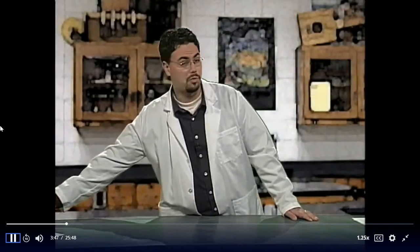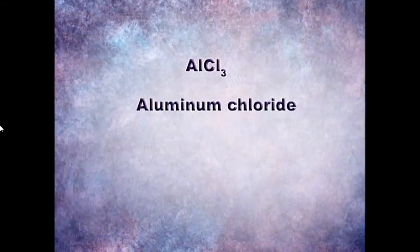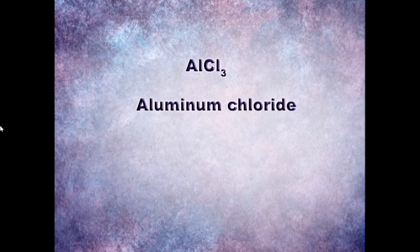Now that we've reviewed the ionic bond, let's take a closer look at an ionic formula. This particular ionic formula represents aluminum chloride. In addition to the symbols for aluminum and chlorine, subscripts are used to represent the number of each ion in the formula unit. If no subscript follows the symbol of an ion, it is understood that the element has only one ion.